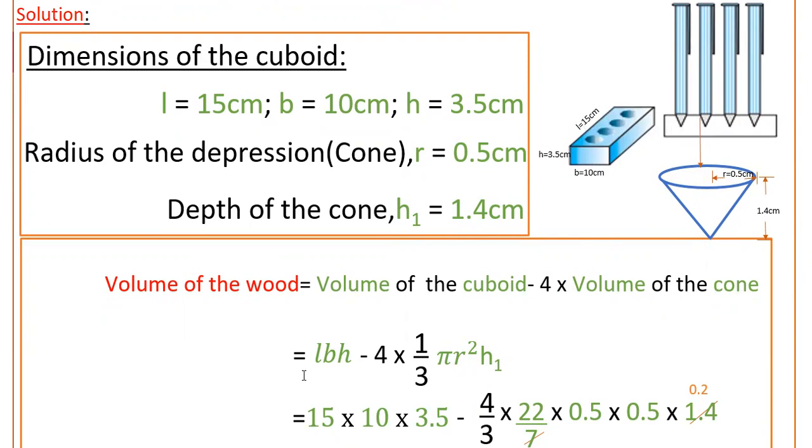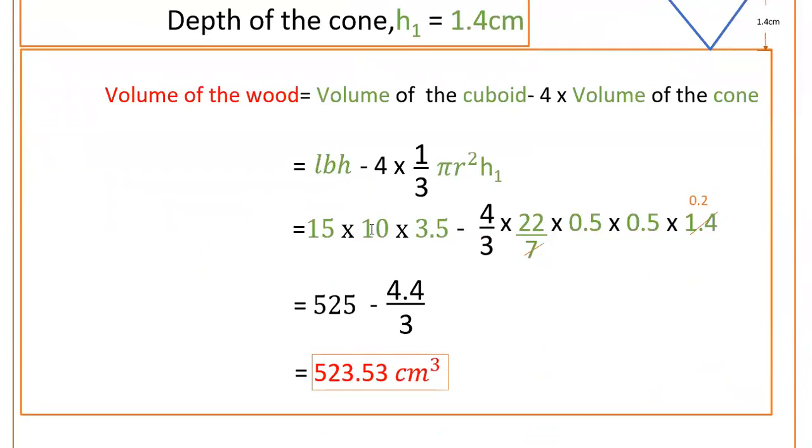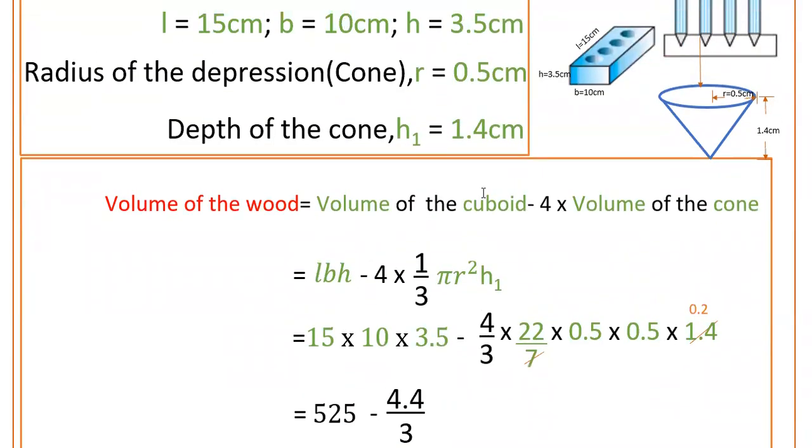Volume of the cuboid is LbH minus 4 into volume of the cone which is one-third pi r square h1. So that is 15 into 10 into 3.5 minus 4 by 3 into 22 by 7. Pi value is 22 by 7 into r is 0.5 into 0.5 into h1 is 1.4.